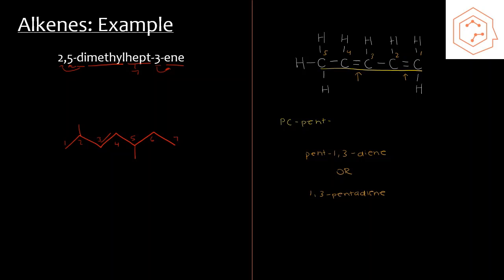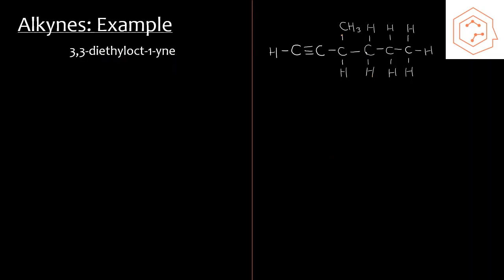Now we have two examples for alkynes. The first is a drawing example for 3,3-diethyloct-1-yne. We identify the parent chain from the prefix 'oct', which means an eight-carbon chain. The suffix '-yne' tells us there is one triple bond, and the number one tells us it's at position one. So we draw the eight-carbon backbone with the triple bond at carbon one.